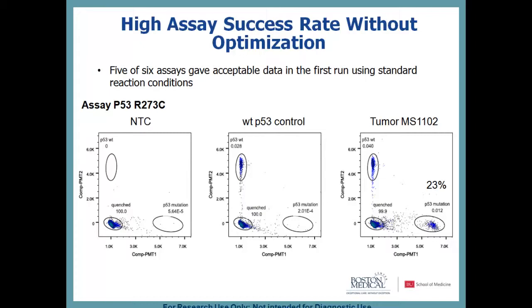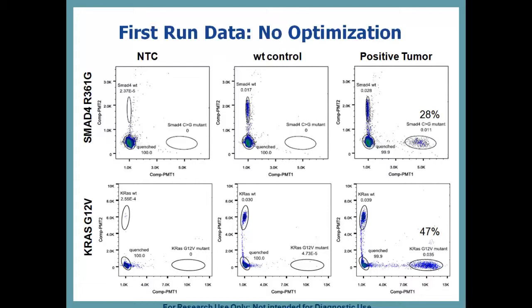Here are two more assays. The top panel is the SMAD4 assay — no-template control, wild-type control in the middle, and the positive tumor on the right. Then the KRAS G12V assay — again, first run, no optimization, just standard conditions. Doesn't look too bad.